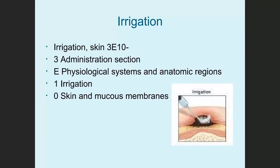Let's start with irrigation. The wound may just need to be irrigated or washed out with a cleansing substance. This code is in the administration section of PCS — three for administration, E for physiological systems and anatomic regions, one for irrigation, zero for skin and mucous membranes. So 3E10 is used for irrigation, just rinsing out the wound with a cleansing or antibiotic substance.